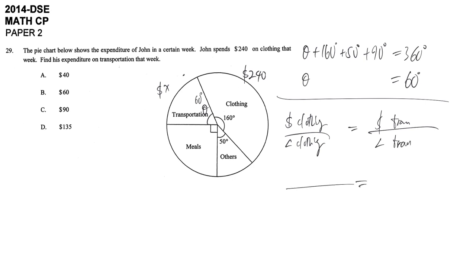Put in every value: $240 divided by 160° equals X dollars divided by 60°. So X equals 240 divided by 160, times 60. Then we get $90.